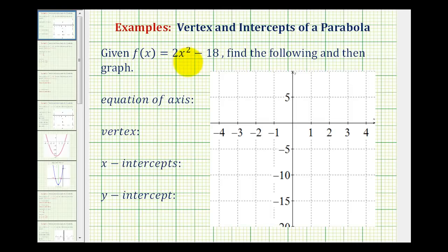Given the function f of x equals 2x squared minus 18, we want to find the equation of the axis or axis of symmetry, the coordinates of the vertex, the x-intercepts and the y-intercept, and then finally graph the function.